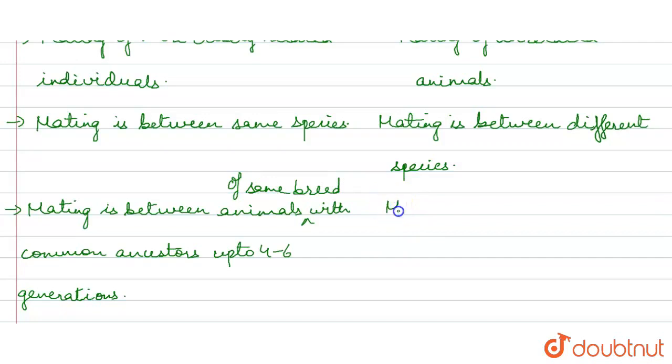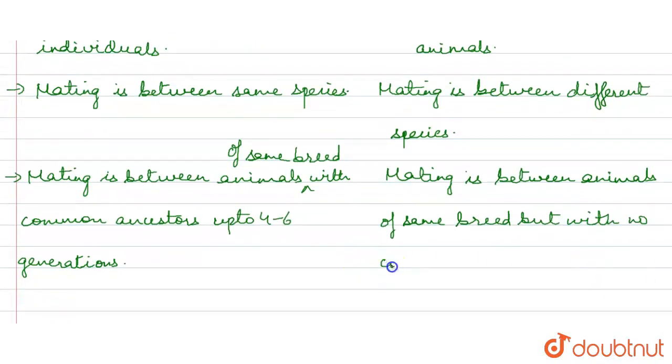Whereas, humara outbreeding me kya hota hai? Mating is between animals of same breed. Same breed to hoti hai animals ki, lekin, unka common ancestor nahi hota hai. But, with no common ancestor.